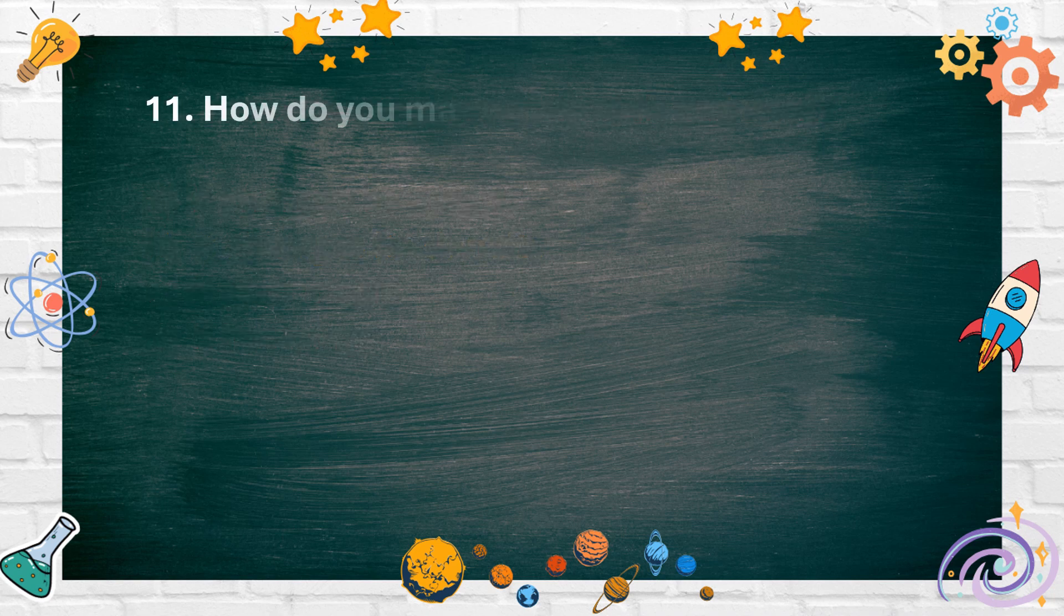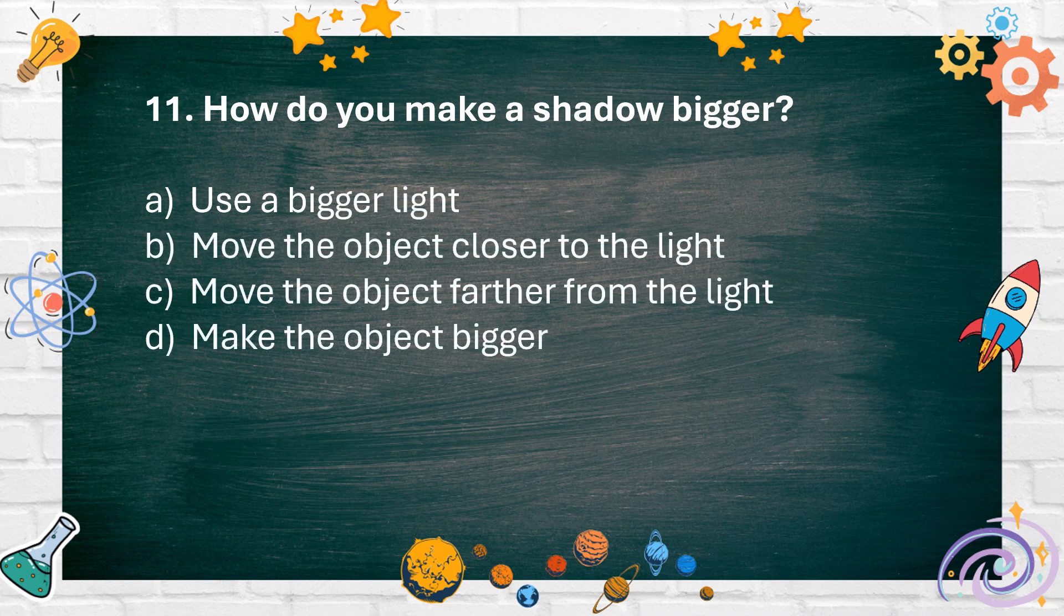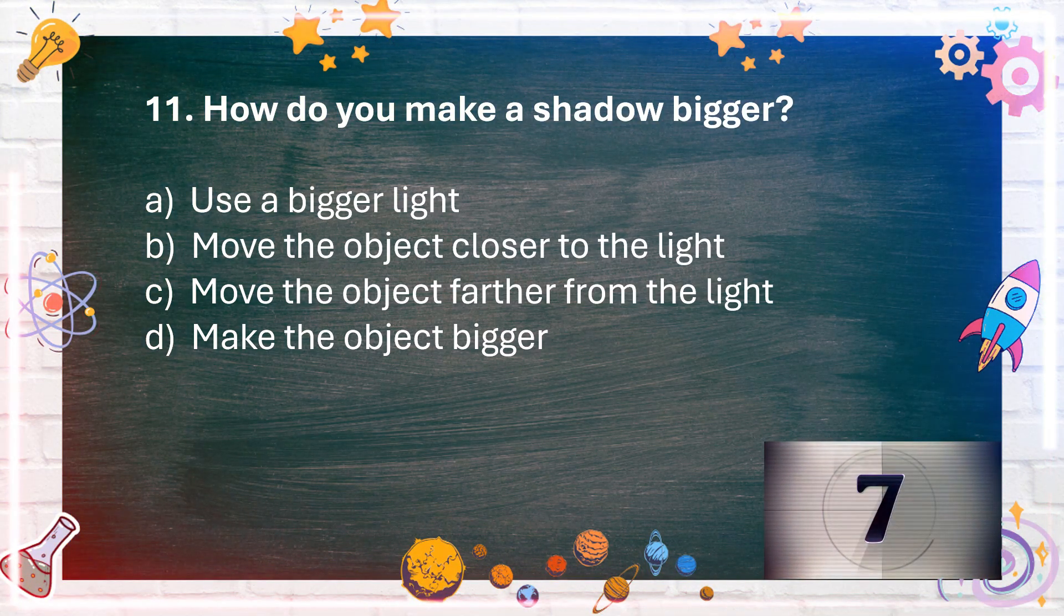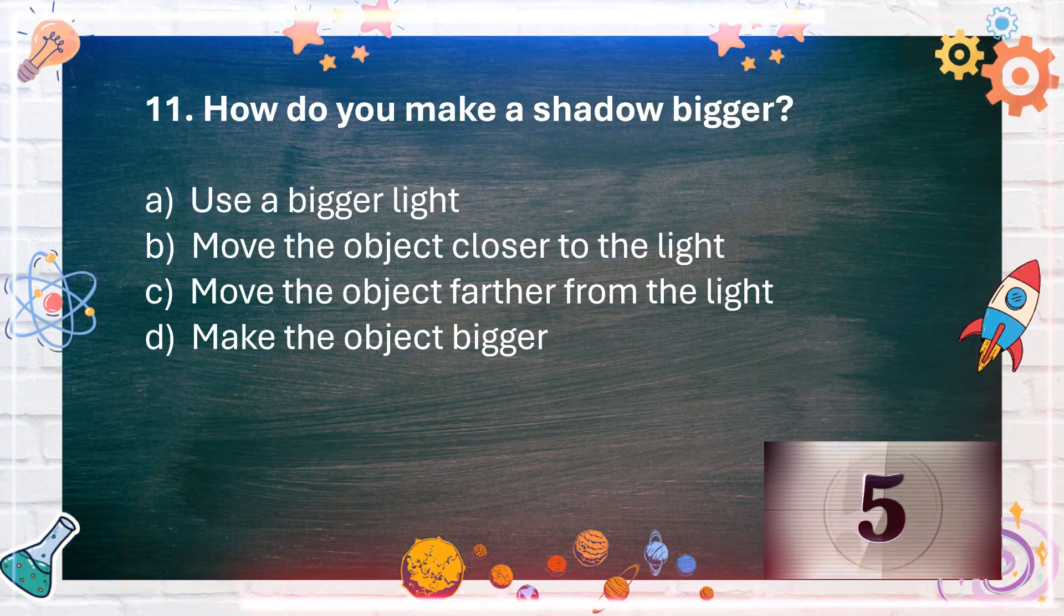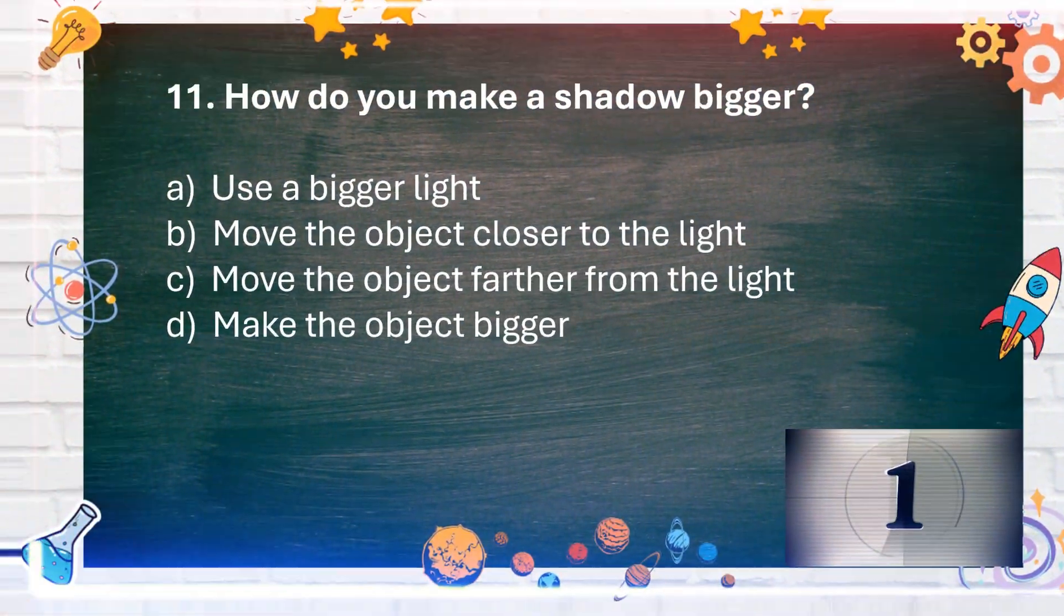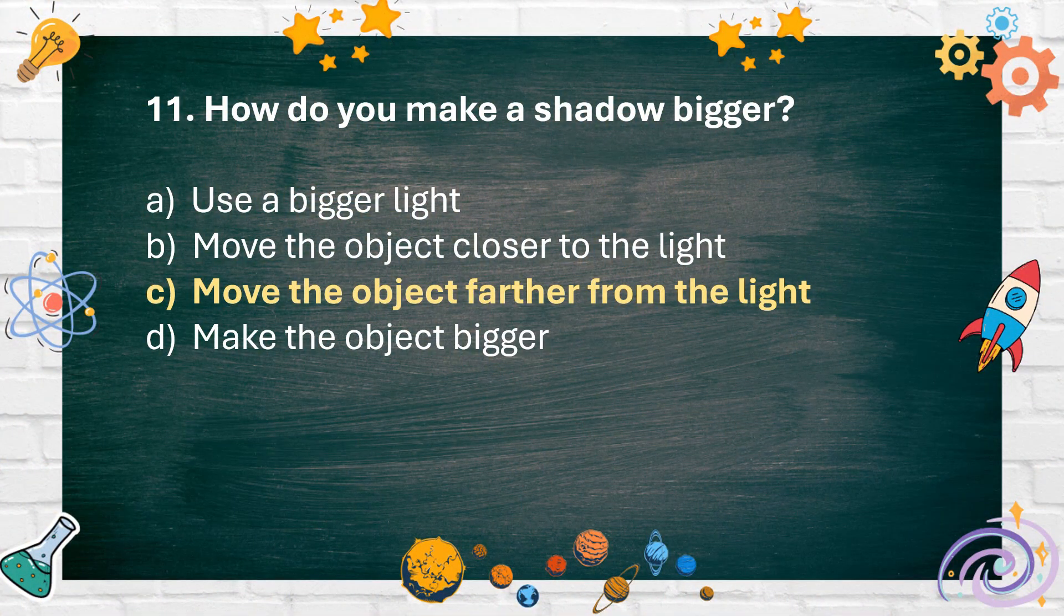Number 11: How do you make a shadow bigger? A. Use a bigger light. B. Move the object closer to the light. C. Move the object farther from the light. D. Make the object bigger. The answer is C. Move the object farther from the light.